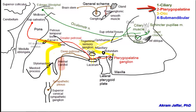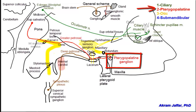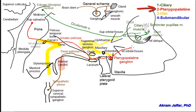It is the preganglionic parasympathetic fibers that relay within the pterygopalatine ganglion. The sympathetic fibers are already postganglionic and do not relay in the ganglion, since the pterygopalatine ganglion is a parasympathetic ganglion. The postganglionic fibers from the pterygopalatine ganglion are distributed with the branches of the maxillary nerve. Some fibers pass with the maxillary nerve into the inferior orbital fissure and accompany the zygomatic branch of the maxillary nerve.